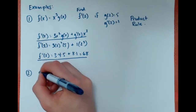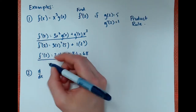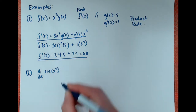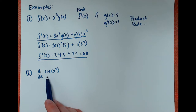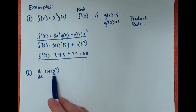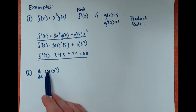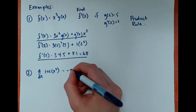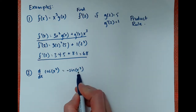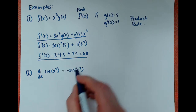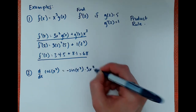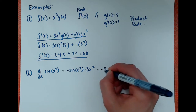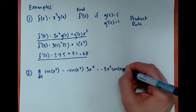Our next example will be d over dx of cos x cubed. This might look like one term, but this is actually going to be chain rule. We take the derivative of the cos part, followed by the derivative of the inside, x cubed. The derivative of cos is negative sine of x cubed — leave the inside as it is — then multiply by the derivative of the inside, 3x squared. So this equals negative 3x squared sine of x cubed.